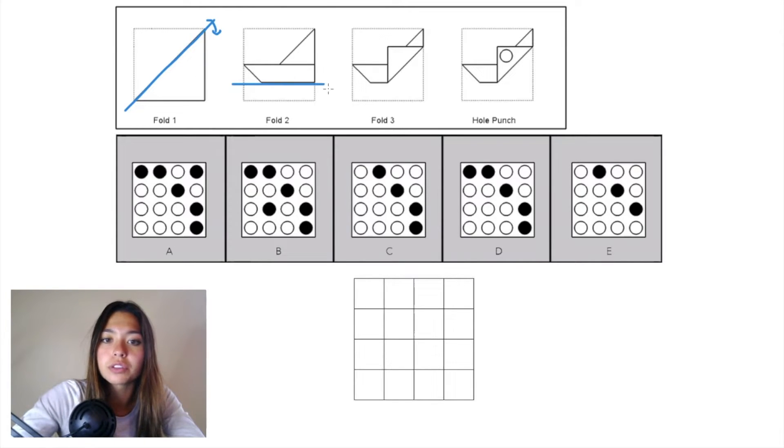In fold 2, we have a horizontal plane and we're folding what's left on that bottom row up into this piece.